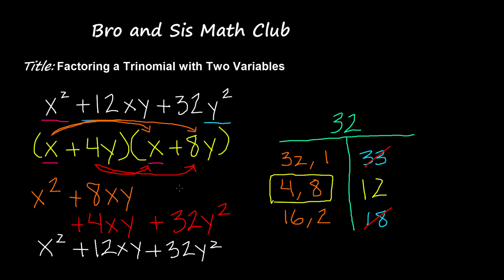So that means that this factorization was correct. So the factorization for this trinomial x squared plus 12xy plus 32y squared is